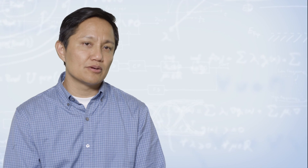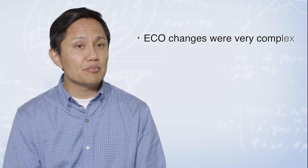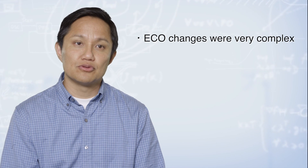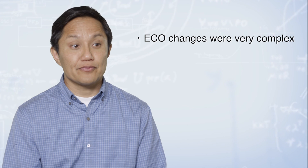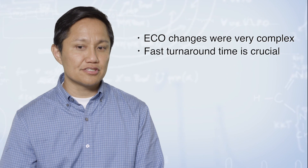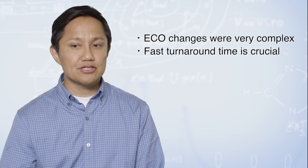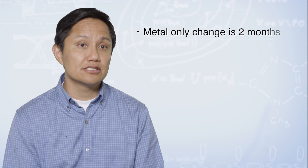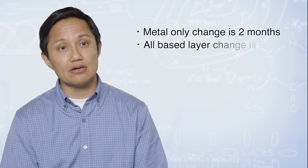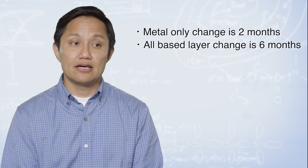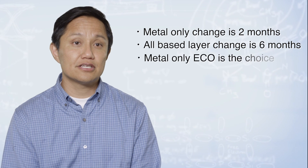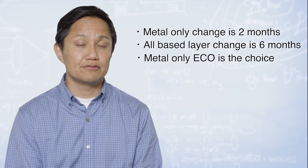The logic changes that were identified to fix the problem — if we were to do it manually — were going to take a long time. The changes were complicated enough that we didn't know if we were going to be able to make all of them. Because schedule was important, we wanted to turn this around quickly. If we implemented the change as a metal-only change, our turnaround time would be only two months. But if we had to go down to implementing all of the base layers, that would take six months. Ideally, the metal-only change would probably be the most efficient.